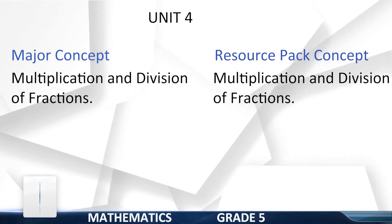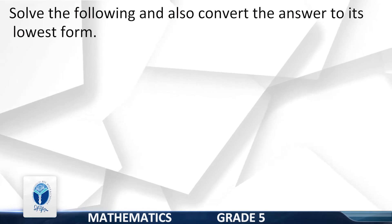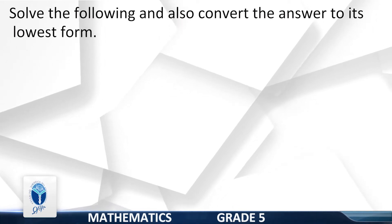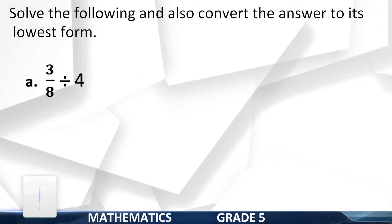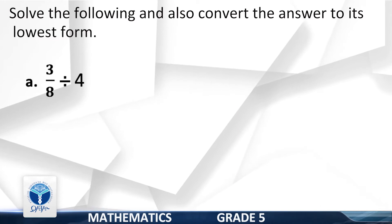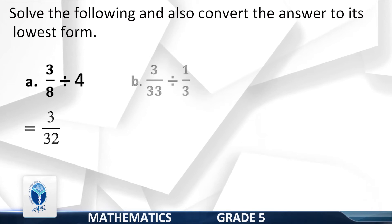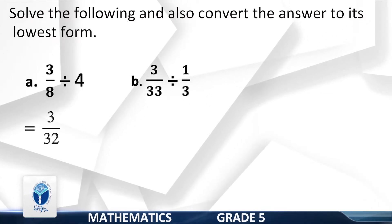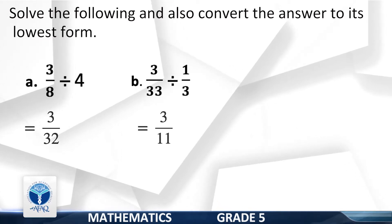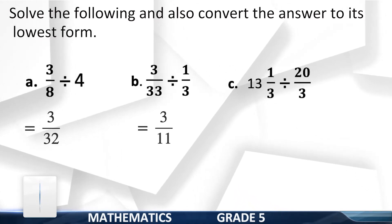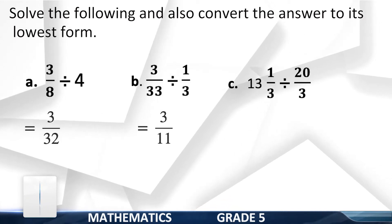Unit 4 — Major Concept: Multiplication and Division of Fractions, Page 67. Solve the following and convert answer to its lowest form. A: 3/8 divided by 4 — your answer is 3/32. B: 3/33 divided by 1/3 — your answer is 3. C: 13 whole 1/3 divided by 20/3 — your answer is 2.